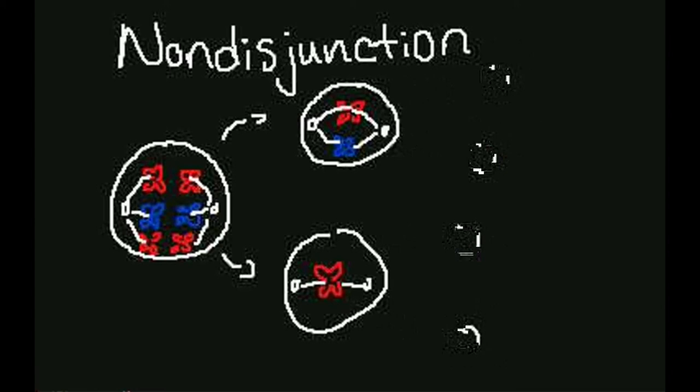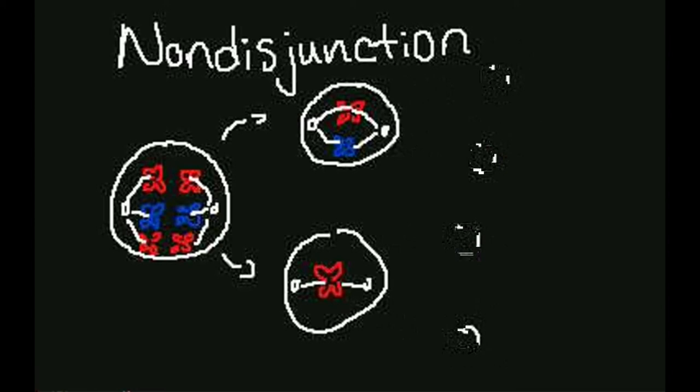As a result, one gamete receives two of the same type of chromosome and another gamete receives no copy. The gamete with only one copy of a particular chromosome is called a monosomic zygote when it's fertilized and it can lead to Down syndrome.